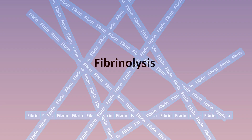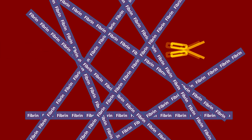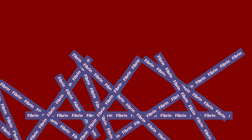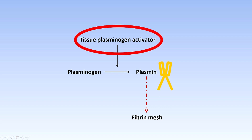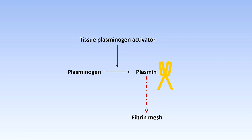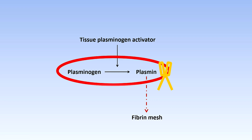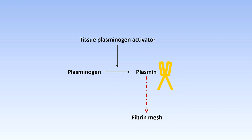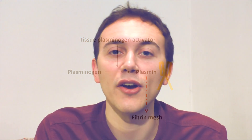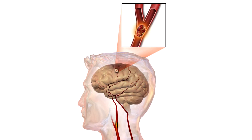Fibrinolysis is a process of breaking down the fibrin mesh which has been created in the coagulation cascade. Tissue plasminogen activator, which is released from endothelial cells, activates plasminogen to its active form, plasmin. Plasmin is a protease which breaks down the fibrin mesh. We can use artificial tissue plasminogen activator or TPA in medicine, and it's usually used when we need to rapidly break down a clot — often in a stroke or in a large pulmonary embolus.